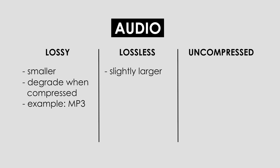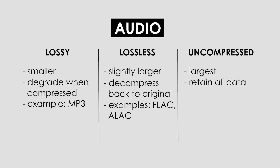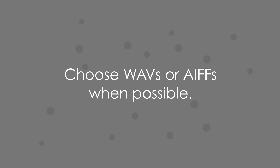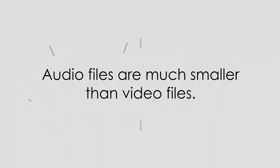Lossless formats, on the other hand, have some compression, but they have the ability to decompress back to their original size. In other words, they don't lose anything in the process, hence the term lossless. An example of a lossless audio file format would be a FLAC or ALAC, which I don't use that often. And lastly, you have uncompressed audio files, which are the highest quality — they retain all of their information. An example of an uncompressed audio file format is a WAV or an AIFF. When you're choosing music files for your video or picking a setting on your Zoom recorder, try to choose a WAV or an AIFF file when you can. I prefer WAVs, because these file types are uncompressed. Audio files are generally pretty small to begin with, so as a filmmaker it's not really worth it to try and save tiny amounts of space on your drive by shaving data off of your audio files.